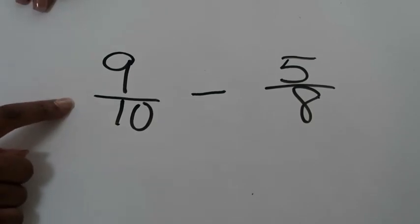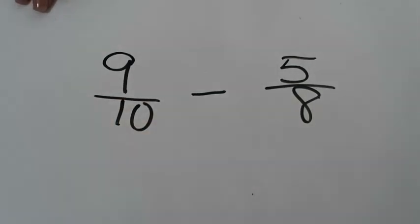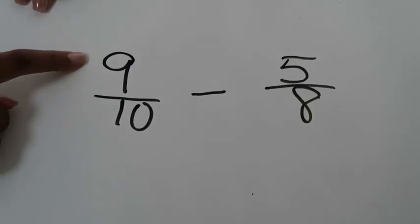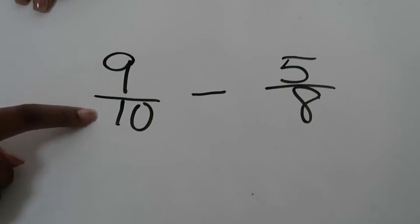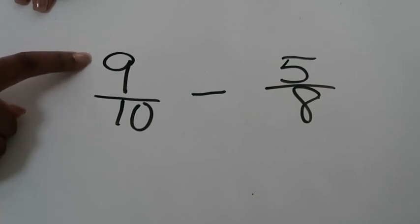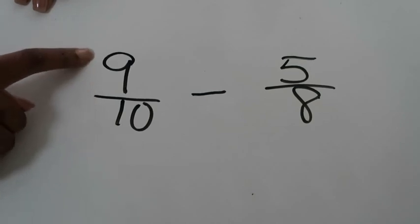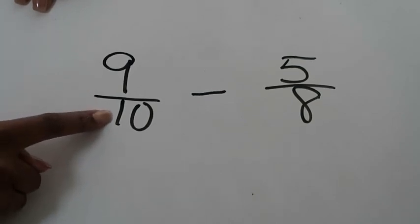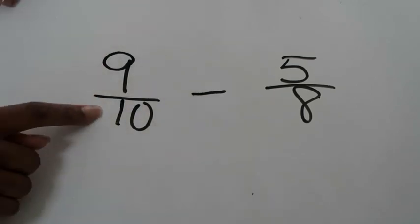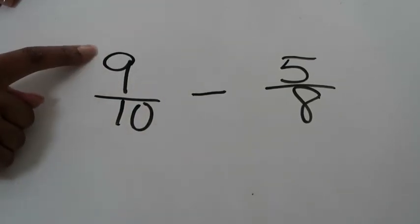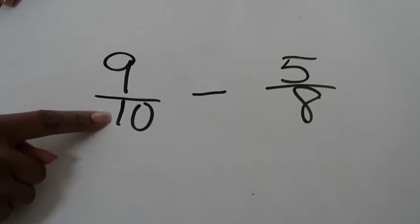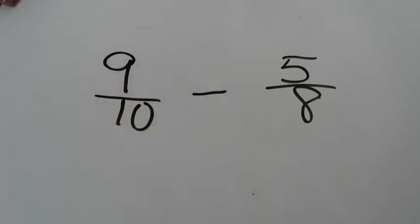In this example, we're dealing with nine tenths and we're going to subtract five eighths from that. The first thing I'm going to do is look at nine tenths and compare the numerator to the denominator. I'm asking myself three questions: Is my numerator nine very far away from the number ten? Is my numerator nine about half of the denominator? Or is my numerator nine very close to the number ten? Those are the three questions you're going to use to help you decide how to round this fraction.